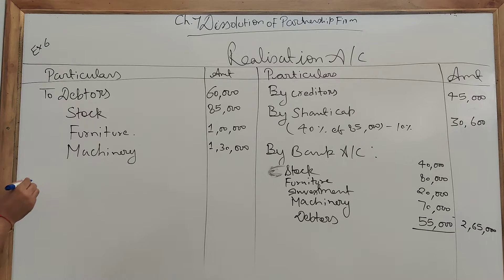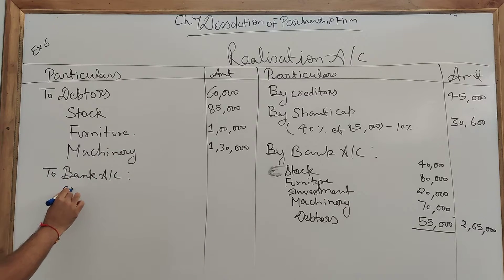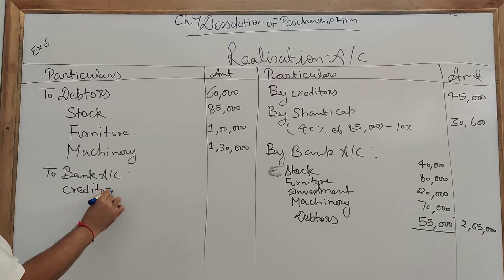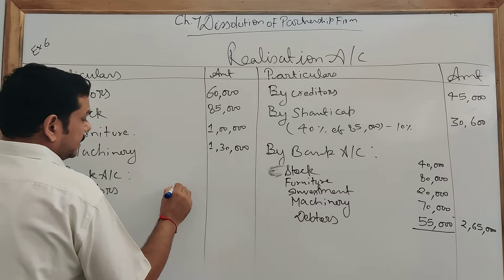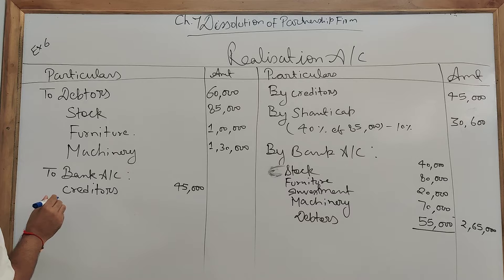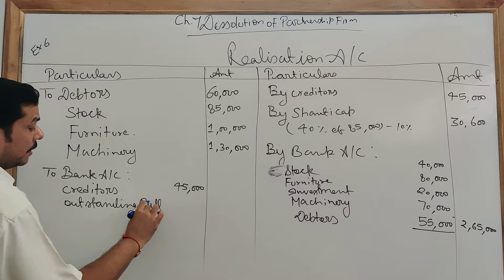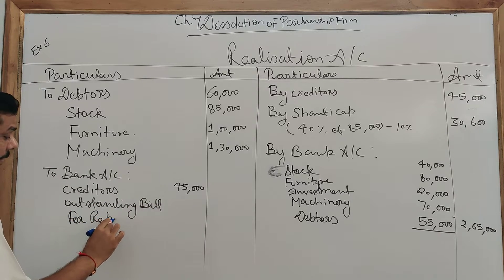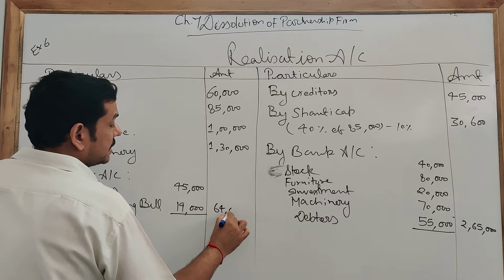Now we are going to make payment of liabilities. On the debit side you will write bank account. First, make payment to the creditors. As nothing specific is mentioned about payment of liabilities, you still have to make payment at book value. Creditors are 45,000, and there is an unrecorded liability — an outstanding bill for repairs of 19,000. Total payment of liabilities comes to 64,000.